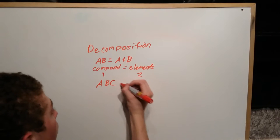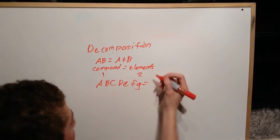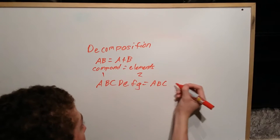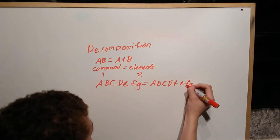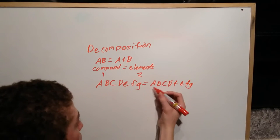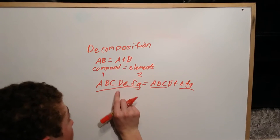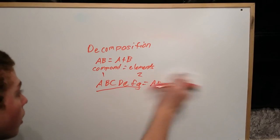So you could have ABCDEFG and then as long as it breaks down into ABCD plus EFG, that's still one to one, so that's still a decomposition. Decomposition just means breaking down.